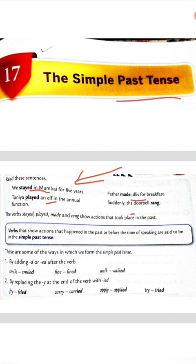Suddenly the doorbell rang. अचानक से doorbell बजी। तो इसमें यह सब जो underlined words हैं — stayed, played, made and rang — these are past tenses. यह हमें बता रहे हैं past के बारे में।